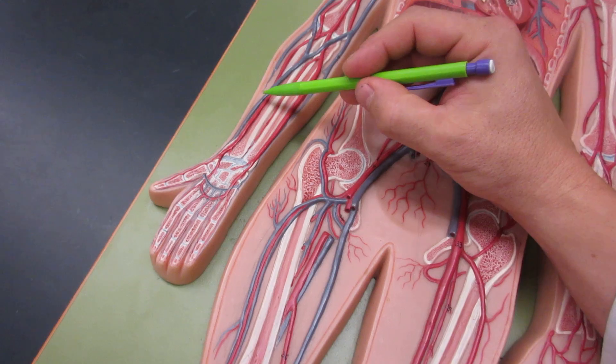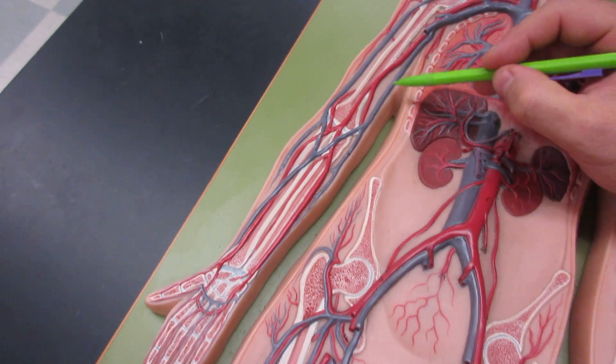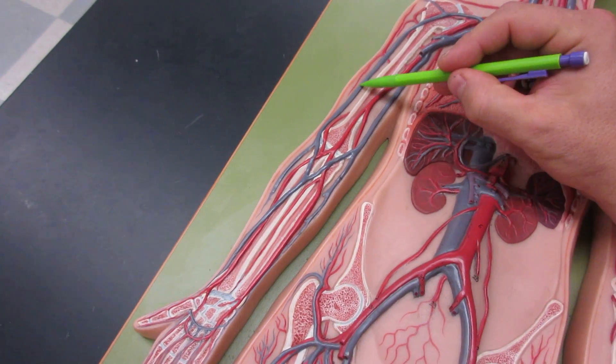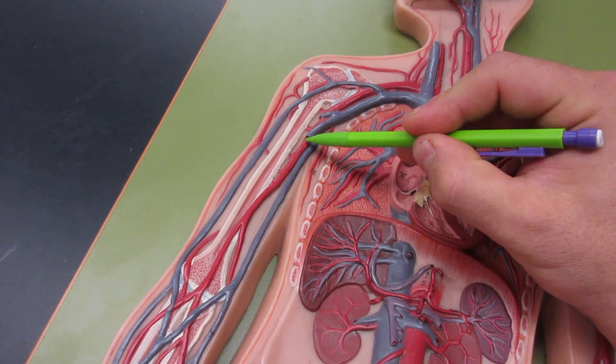Alright, draining the arm you have the radial and ulnar veins. This is the median cubital vein over here. You have the basilic vein and this is the cephalic vein. This is the brachial vein which was cut.